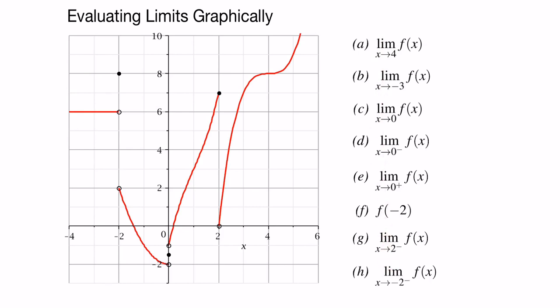The first one is to find the limit as x approaches 4. Let's locate 4 on our graph. For values greater than 2, this looks like a cubic function is defined in that domain. So let's follow the curve from the left, and as we get closer and closer to 4, we see that f equals 8. So our left-hand limit is 8.